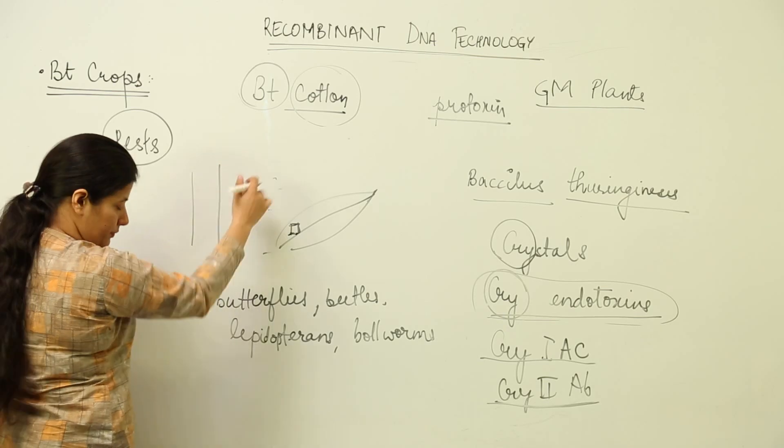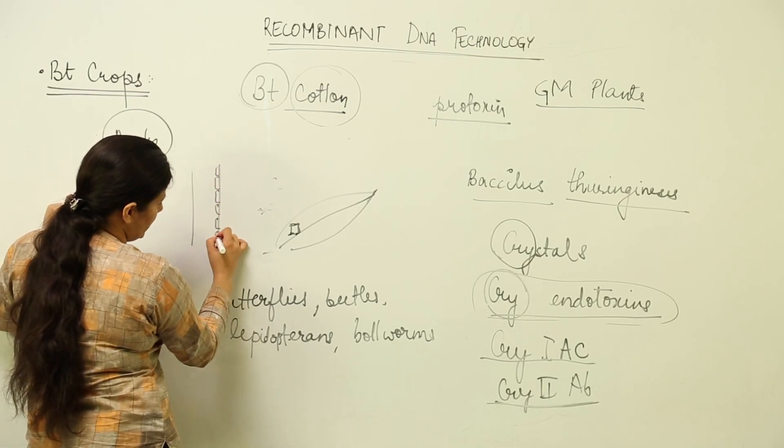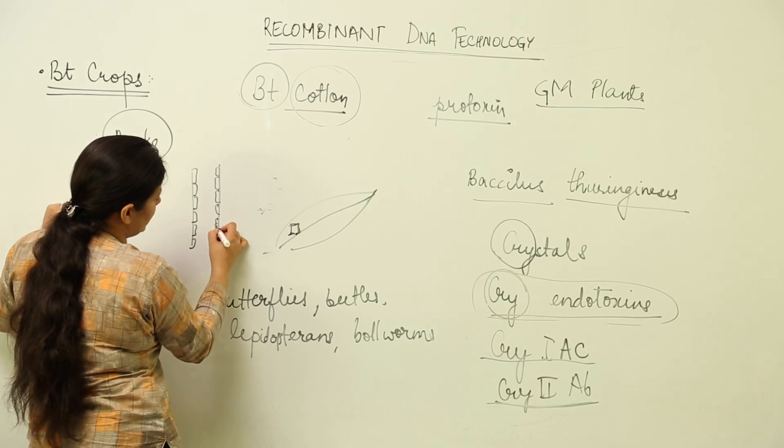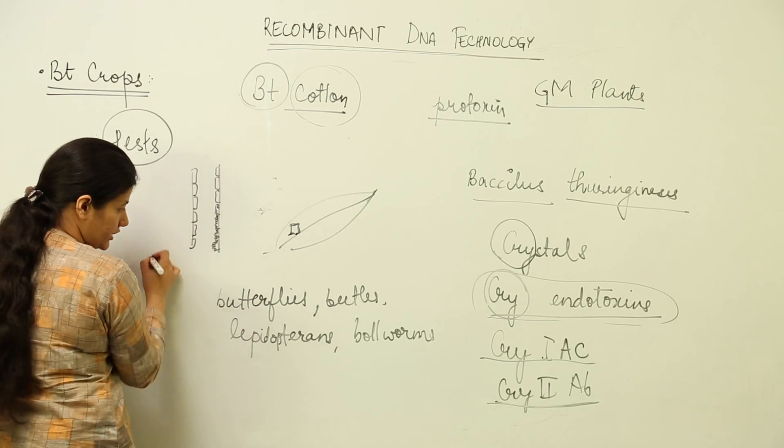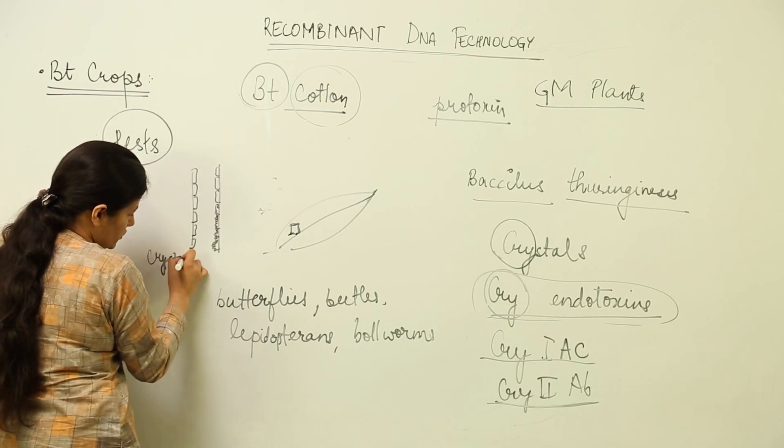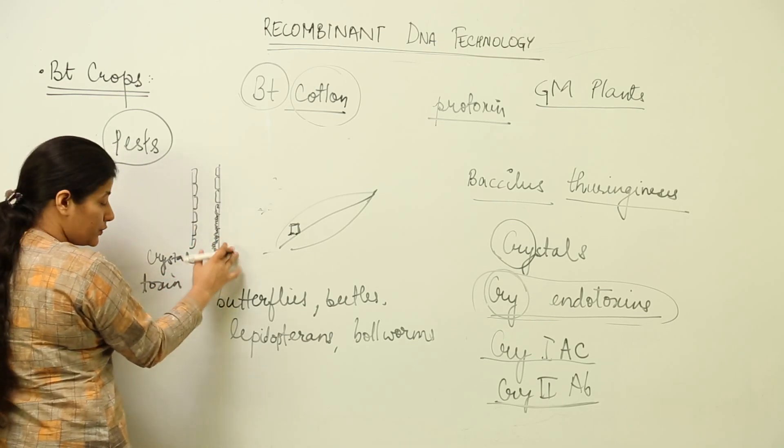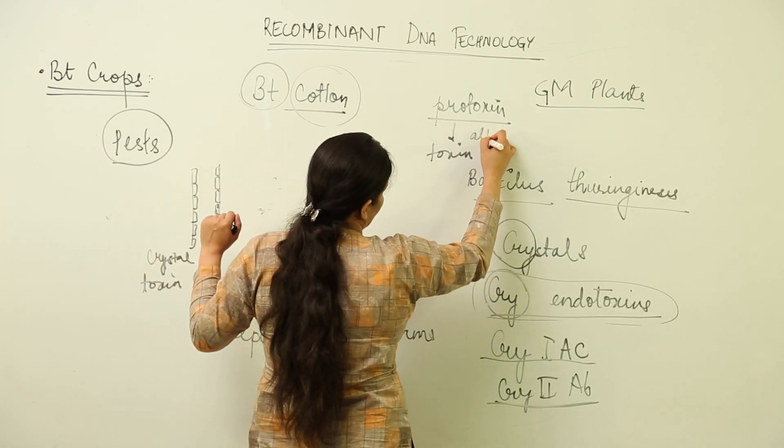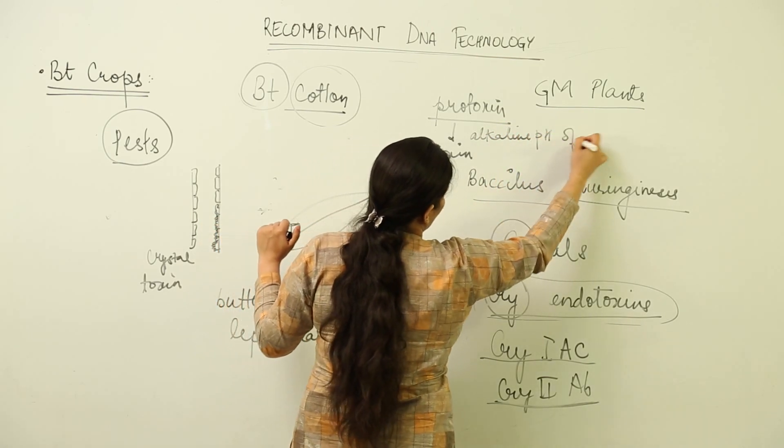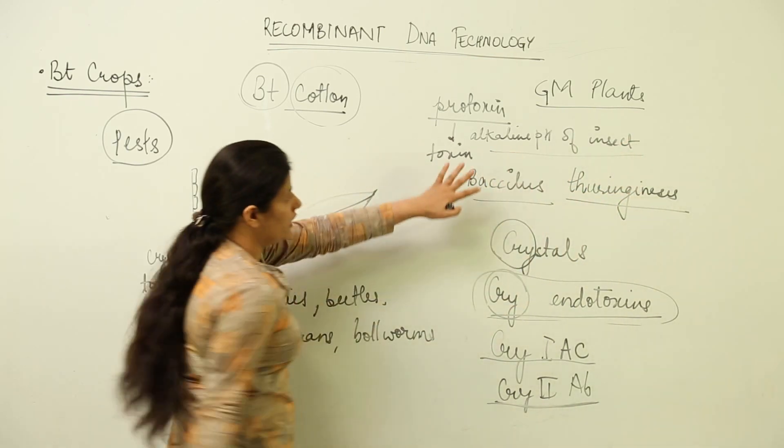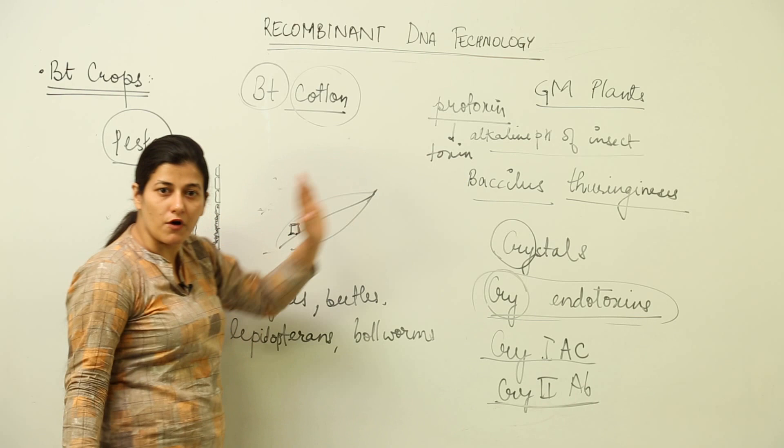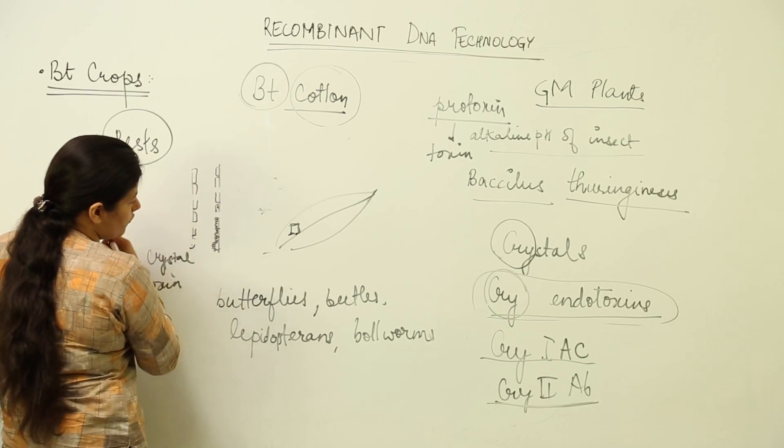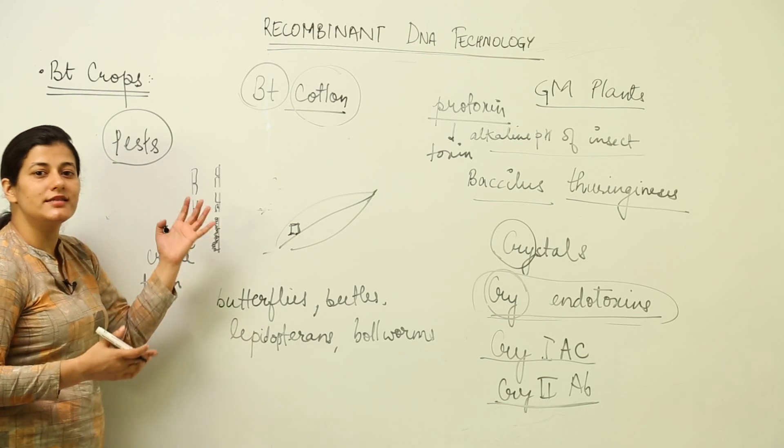Inside the gut, this protoxin comes in contact with the brush bordered epithelium of the intestine and gets converted into proper crystal toxin. The protoxin is converted to real toxin when it gets alkaline pH of the gut of the target insect. In that alkaline pH, it becomes a toxin, forms crystals, and those crystals create pores inside the intestinal wall of the insect. Once the pores are created, the insect is going to die.